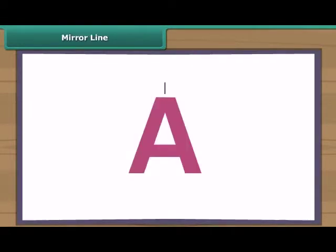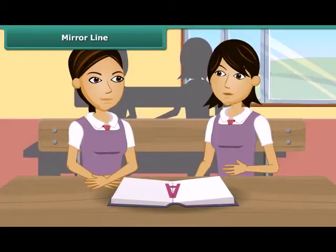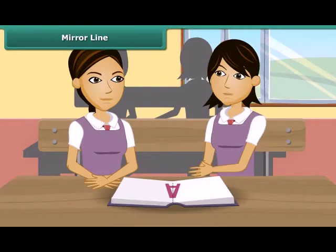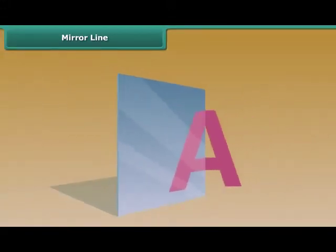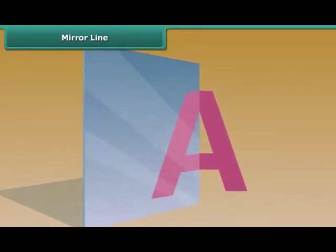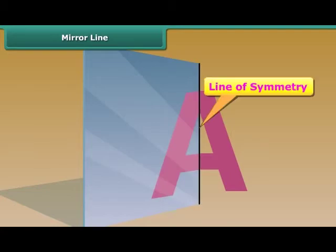A shape has a line of symmetry when one half of it is the mirror image of the other half. Now let's check whether the line drawn on A is the line of symmetry or not. We take its one half and place it in front of a mirror. Its one half is equal to the other half — this means that this is the line of symmetry.